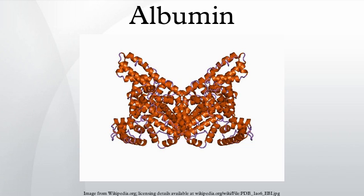Albumins are a family of globular proteins, the most common of which is serum albumin. The albumin family consists of all proteins that are water-soluble, are moderately soluble in concentrated salt solutions, and experience heat denaturation. Albumins are commonly found in blood plasma, and are unique from other blood proteins in that they are not glucosylated. Substances containing albumins, such as egg white, are called albuminoids.